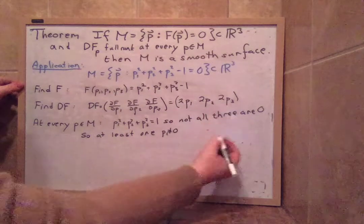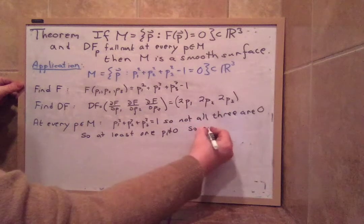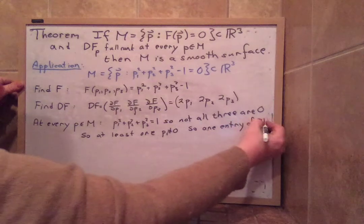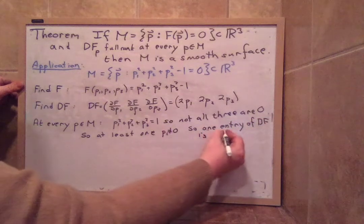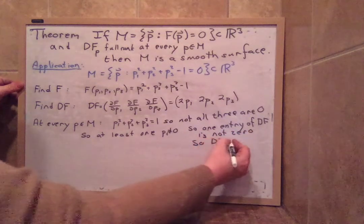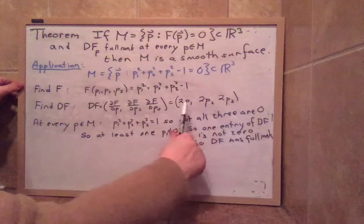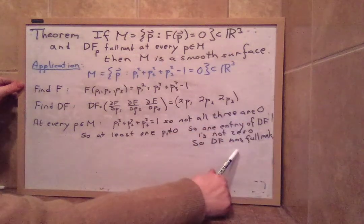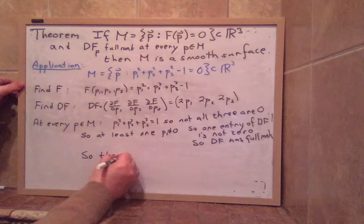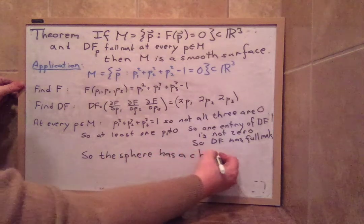So that means one of these entries, one of these entries of df is not 0. So df has full rank. And since df has full rank, it has a non-zero number in here. So it's full rank. So df has full rank. So the sphere has a chart at each point.